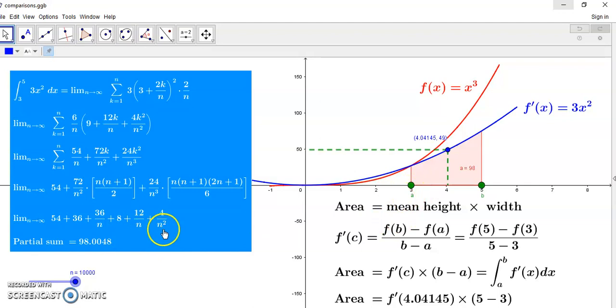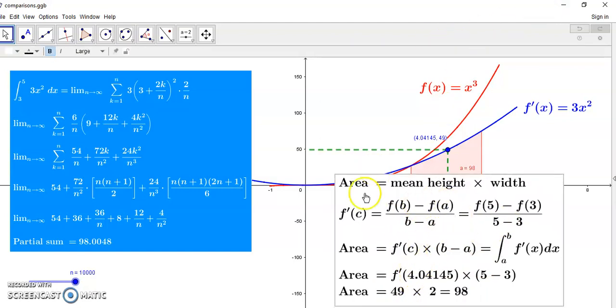But as you can see, n never actually gets to be an infinitely large number. And that's not how this value of 98, which is certain, is found. Whereas in the new calculus, you will have an exact value. And in the new calculus, as you see over here in this box, the mean value theorem is what helps you to find the area.